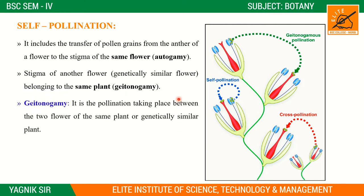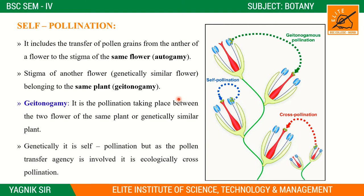Geitonogamy means pollination taking place between two flowers of the same plant. Genetically it is self pollination, but because a pollen transfer agency (vector) is involved, it is ecologically considered cross pollination.